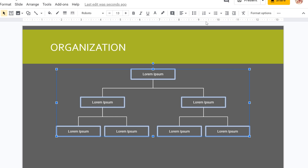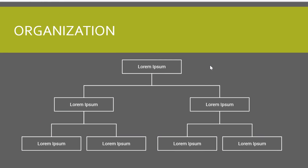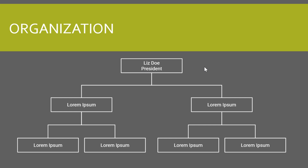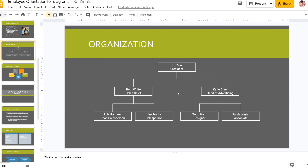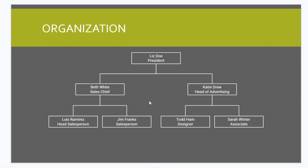Now let's edit the actual content. To edit a text box, make sure that nothing is selected, then click the text that you want to edit. The insertion point appears, and you can make your edits. When you're done, click an empty area to deselect the text box. I've updated all the names in the diagram, but I need to make a structural change.